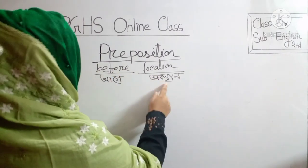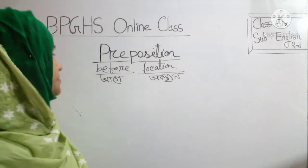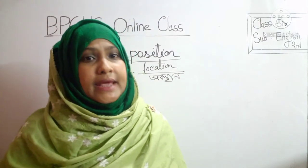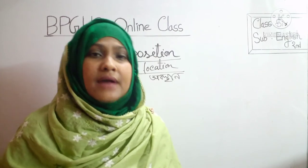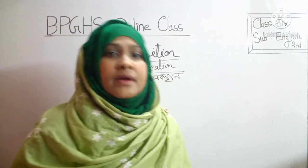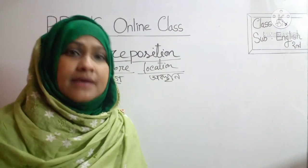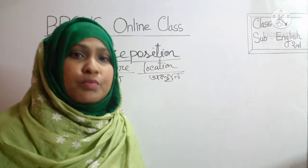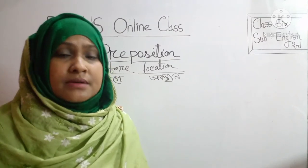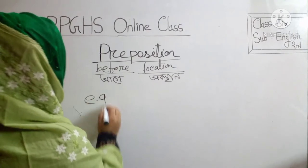A preposition is a word placed before a noun or a pronoun or noun equivalent to show its relation with some other words in the sentence. অর্থাৎ আমরা যদি বাংলায় বলি, preposition হলো একটি শব্দ যা একটি বাক্যে কোনো noun বা pronoun-এর পূর্বে বসে বাক্যের অন্যান্য শব্দগুলোর সাথে সম্পর্ক প্রকাশ করে এবং একটি link তৈরি করে। চলো আমরা একটা example দেখি।